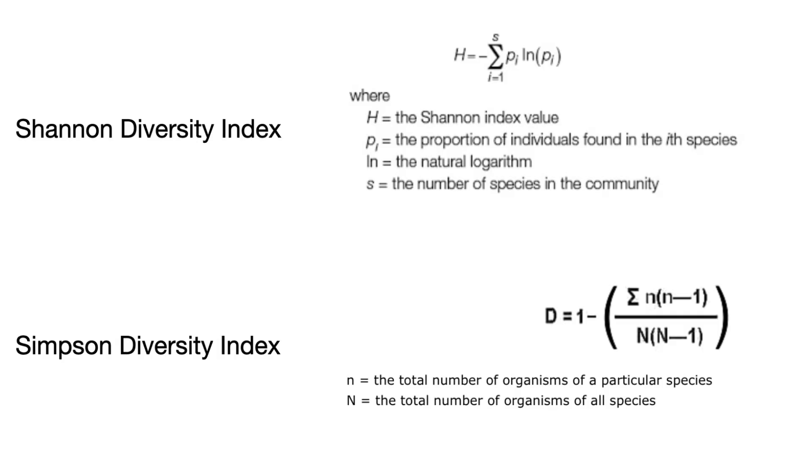To do this, biologists often use indices of species diversity. The two major indices for this exam include the Shannon index and the Simpson index, with the latter being a little more common on the test. I won't necessarily go into a sample calculation question here, as there haven't been too many calculation questions on this topic in recent exam standards — but you never know, so I'll add some more information in the description below.